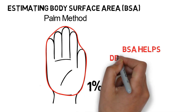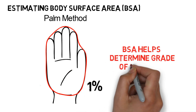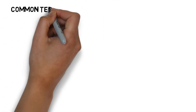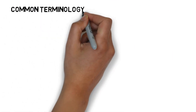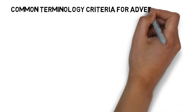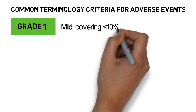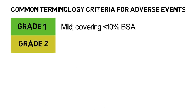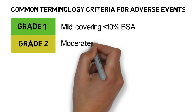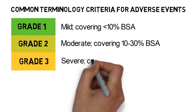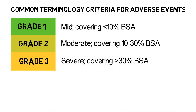Grading is based on common terminology criteria for adverse events, or CTC-AE. Generally, for skin rashes, grade 1 is mild, covering less than 10% of body surface area. Grade 2 is moderate, covering 10% to 30%. Grade 3 is severe, covering over 30% of body surface area.